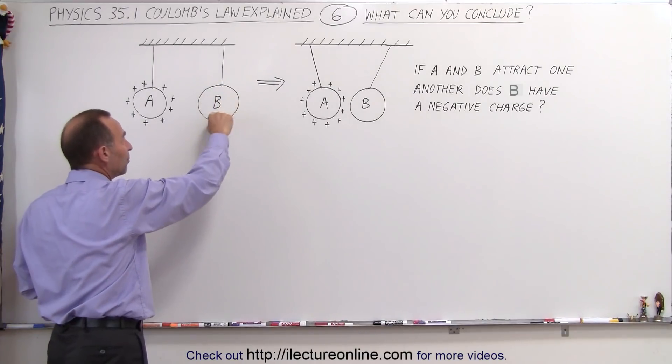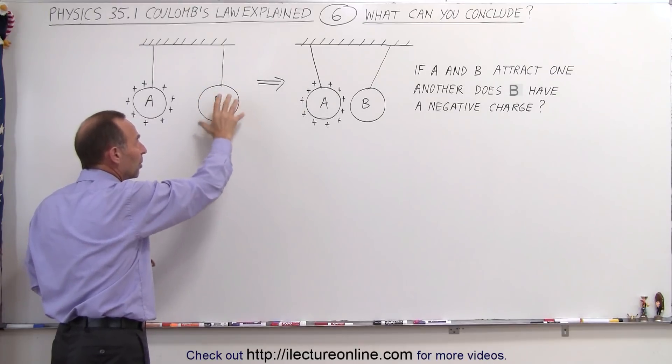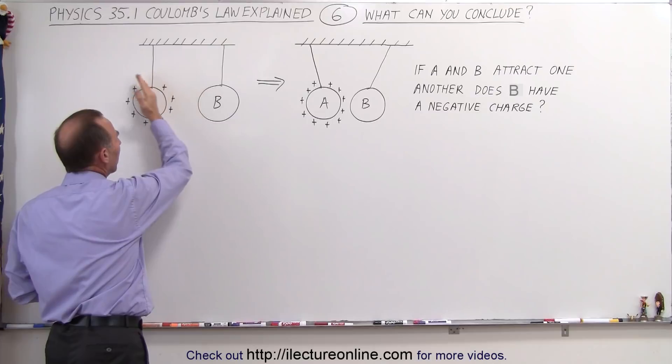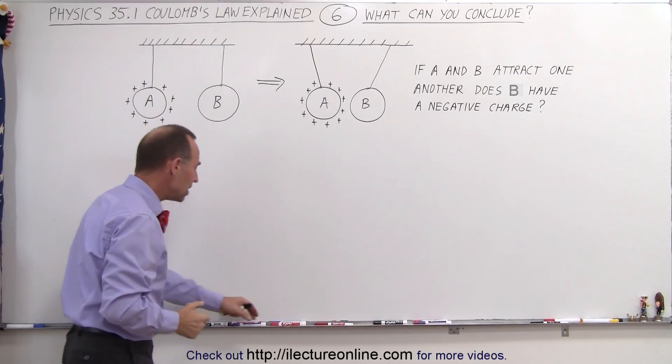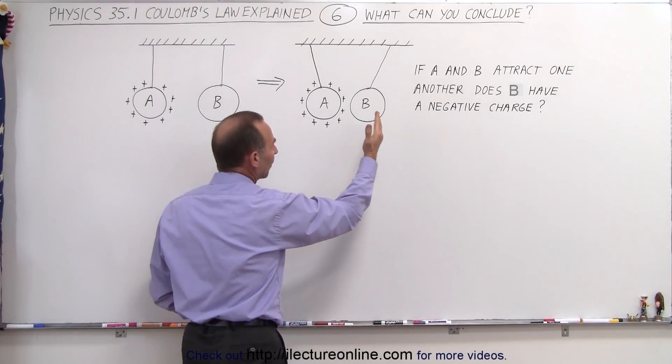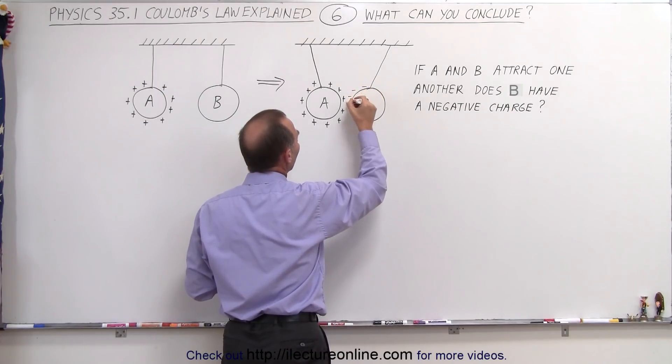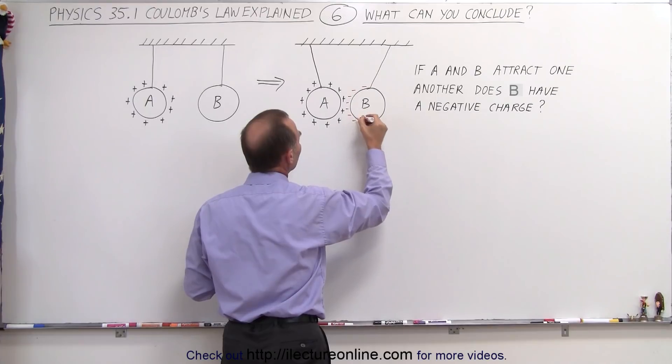the negative charges on B that are currently evenly distributed among the positive charges will be attracted towards the positive charges of A, which means that some of them will migrate towards the left, and you'll have a higher density of negative charges on the left side of the sphere.